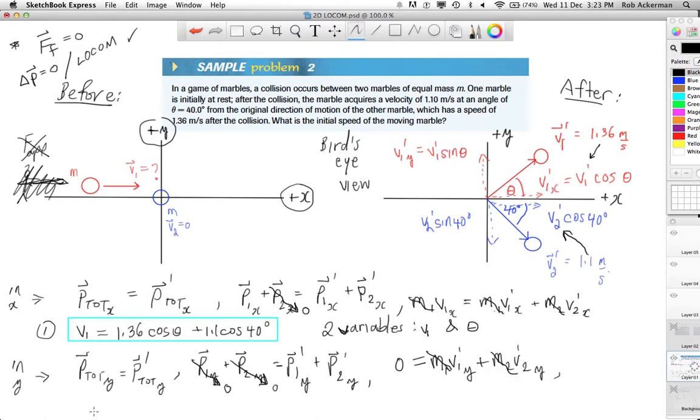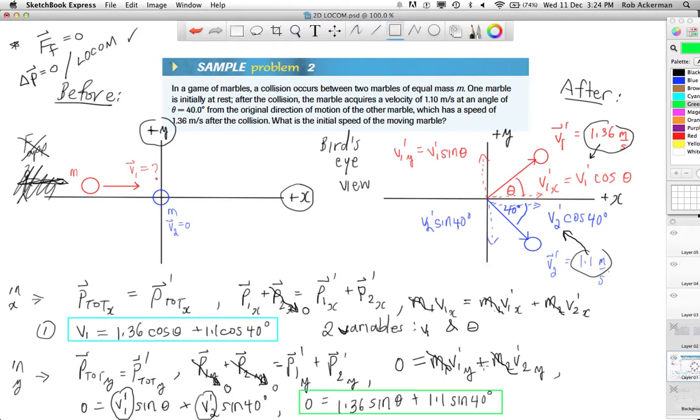However, once again, the masses are the same. So they are a common factor. They drop out in this example. And that leaves me with the following. 0 equals v1 prime sine of theta, plus v2 prime sine of 40 degrees. But keep in mind, we know v1 prime, it is 1.36. And we know v2 prime, it is 1.1. So I actually have a lot of information here. 0 equals 1.36 sine theta, plus 1.1 sine 40 degrees. And if I highlight that, so that you can keep your eyes on it, look what you've got. You've got two equations in two unknowns. I'll call this equation 2 here.